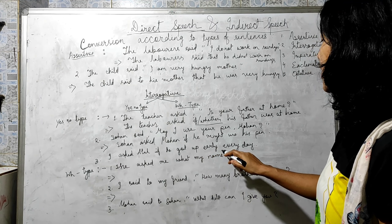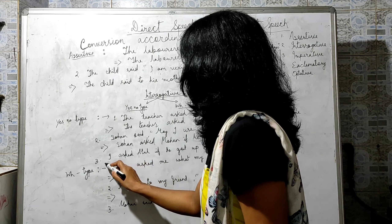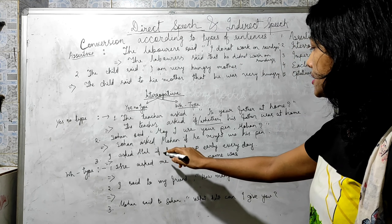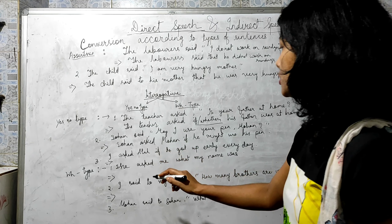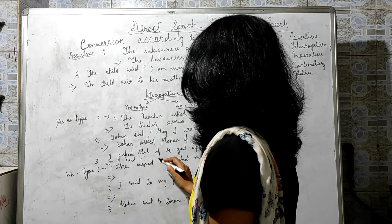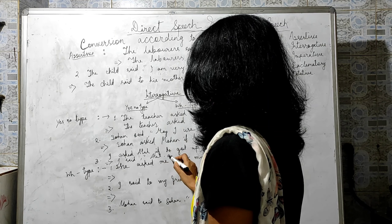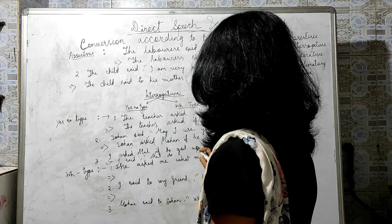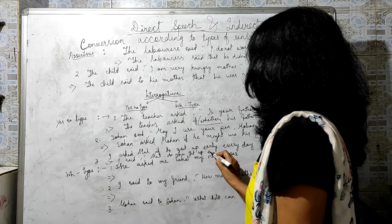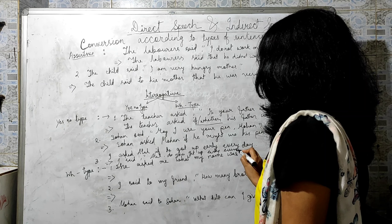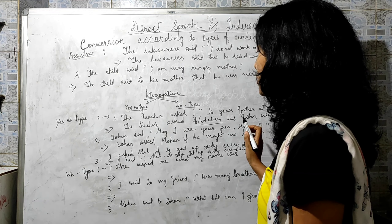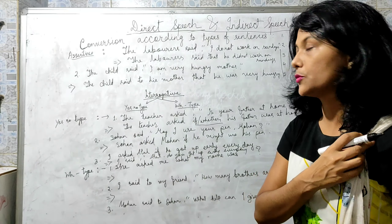Another example: 'I ask Atul if he got up early everyday' — converting to direct speech: 'I said to Atul, do you get up early everyday?' Don't forget the question mark at the end of direct speech interrogative sentences.